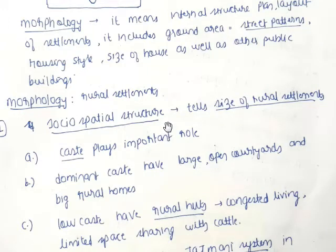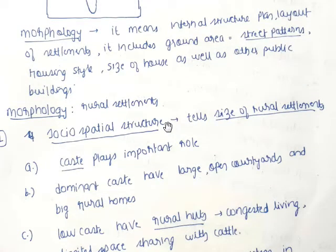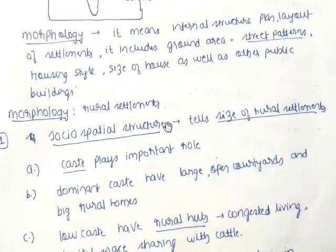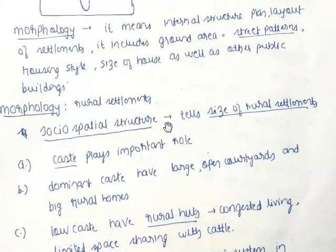Now we discuss morphology of rural settlements. Morphology mainly means internal structure. It includes ground area, street patterns, housing styles, and the size of houses as well as other public buildings.